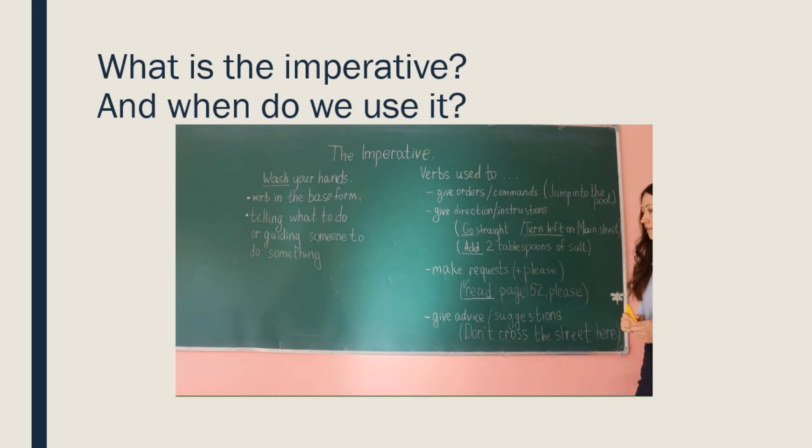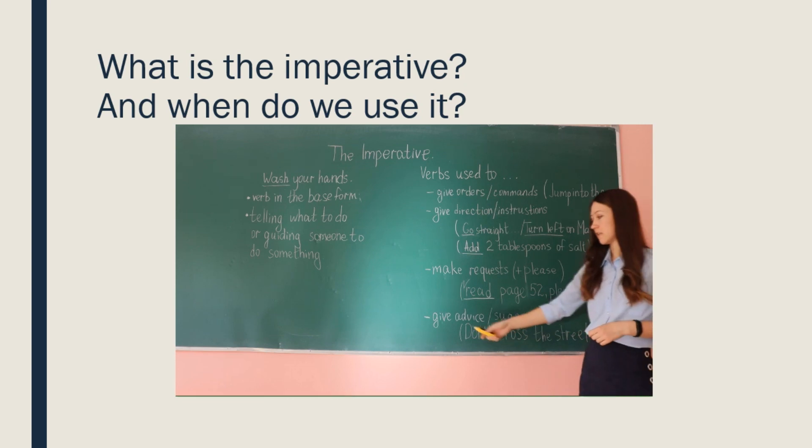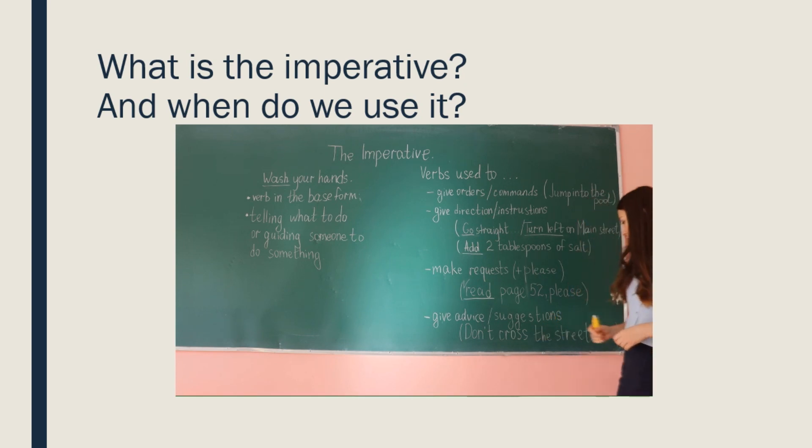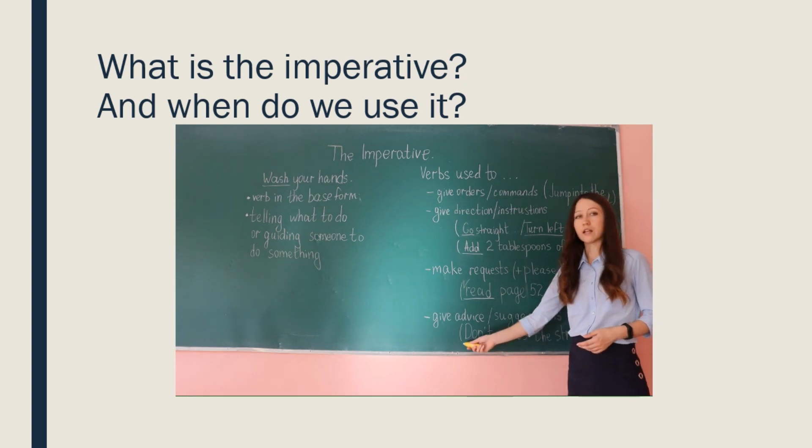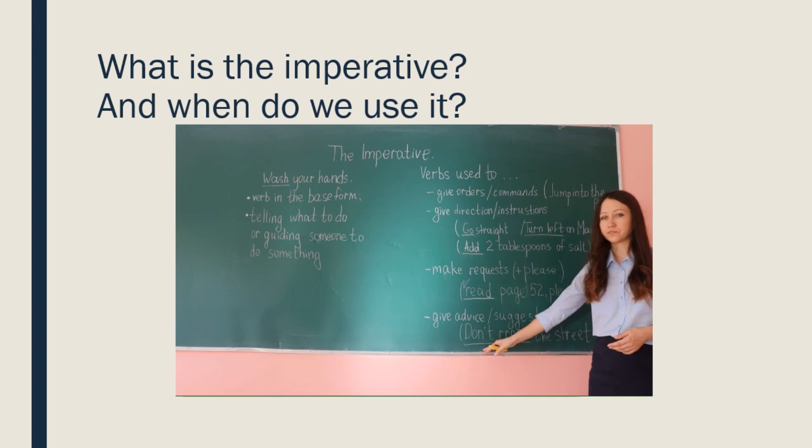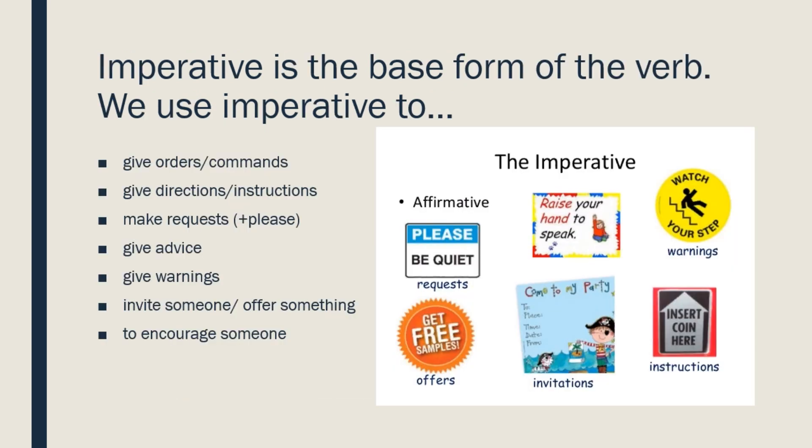And next use is giving advice or suggestions. For example, I say you don't cross the street here. So, I am worried about you. And to cross the street here can be dangerous for you. So, I tell you don't cross. And pay attention that here the imperative is a negative form. Don't cross.